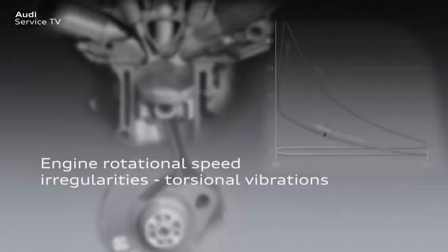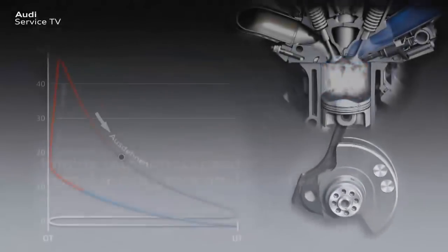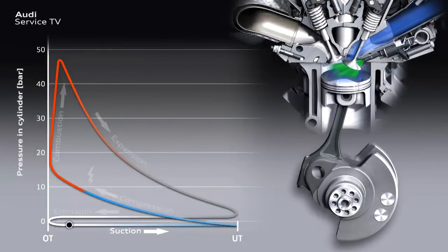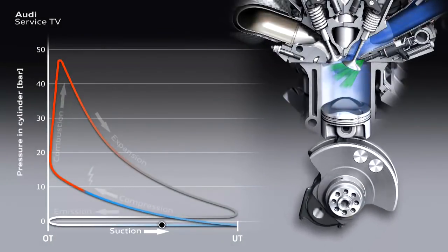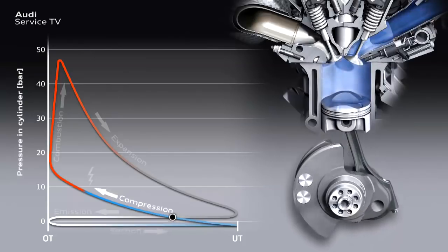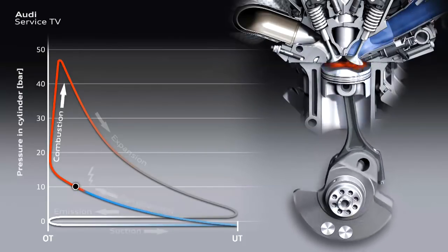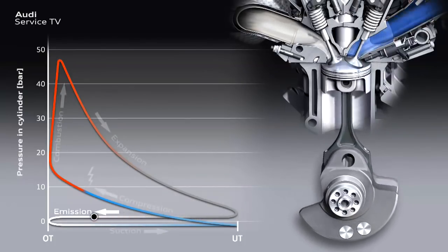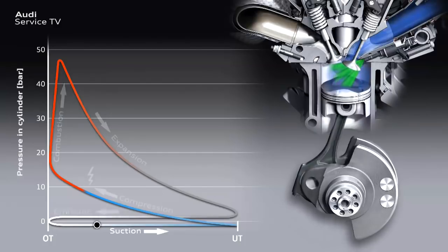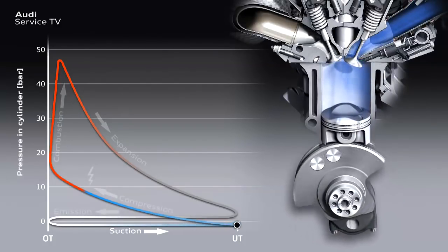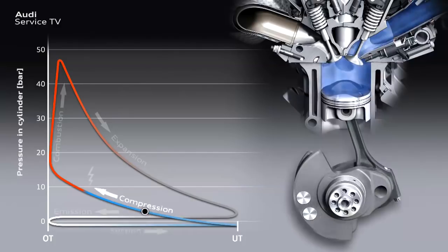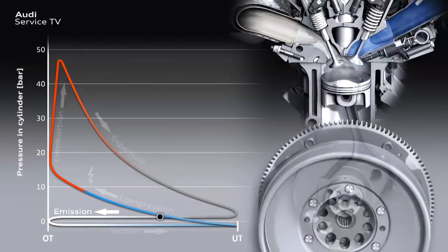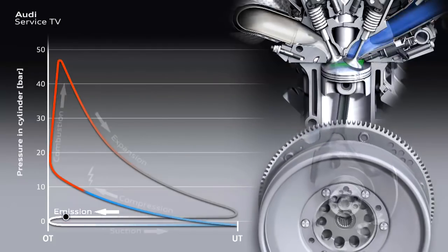What causes these engine rotational speed irregularities? On a reciprocating piston engine, the pressure gradient in the cylinder during the four cycles produces an uneven torque on the crankshaft. On each work cycle, the combustion of the fuel-air mixture greatly accelerates the crankshaft. During the other three cycles, the crankshaft decelerates, sometimes strongly and sometimes less strongly. To enable the engine to mainly run smoothly at lower speeds, a centrifugal mass — the flywheel — smooths out these rotational speed irregularities to a certain extent.